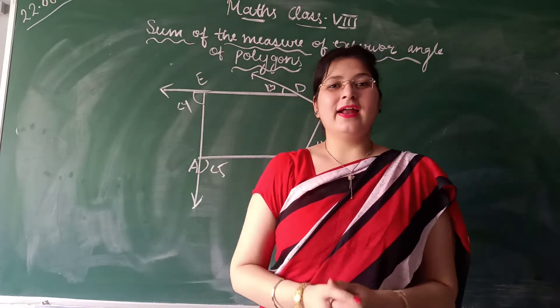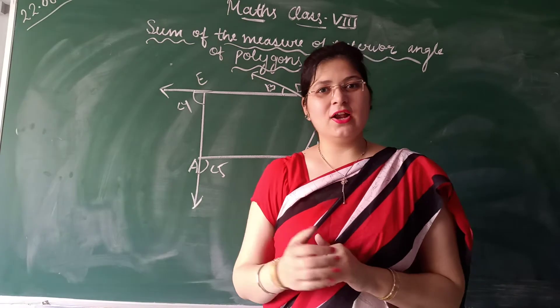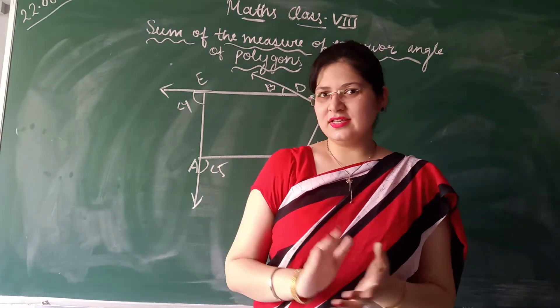So here I am to prove that sum of the measure of the exterior angle of any polygon is 360. See how.